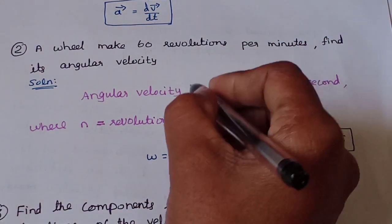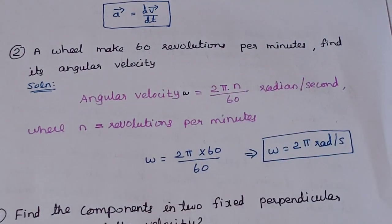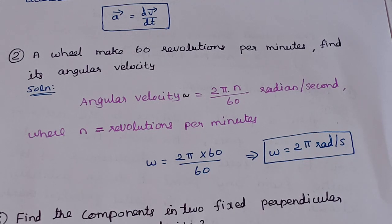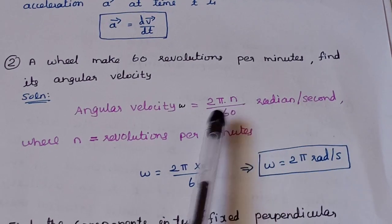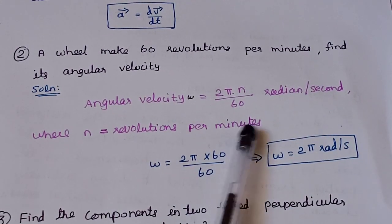The angular velocity omega is equal to 2π into n divided by 60. The angular velocity omega is in radians per second. The formula gives radians per second. You will have 60 revolutions per minute, so divide by 60 to convert to revolutions per second.